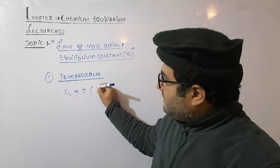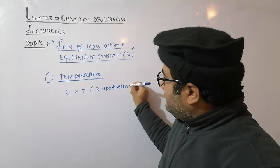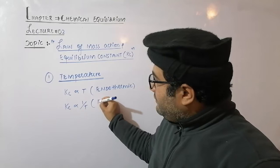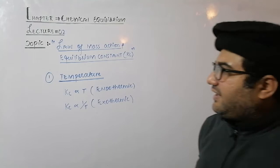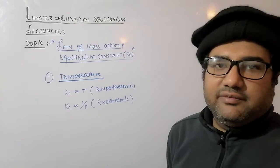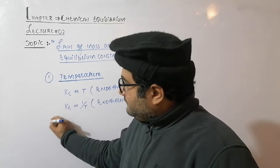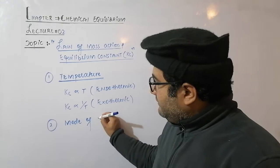Kc is directly proportional to temperature when the reaction is endothermic. For endothermic reactions there is a direct relation between Kc and temperature, and for exothermic reactions there is an inverse relation between the equilibrium constant and temperature. The second factor is the mode of reaction.